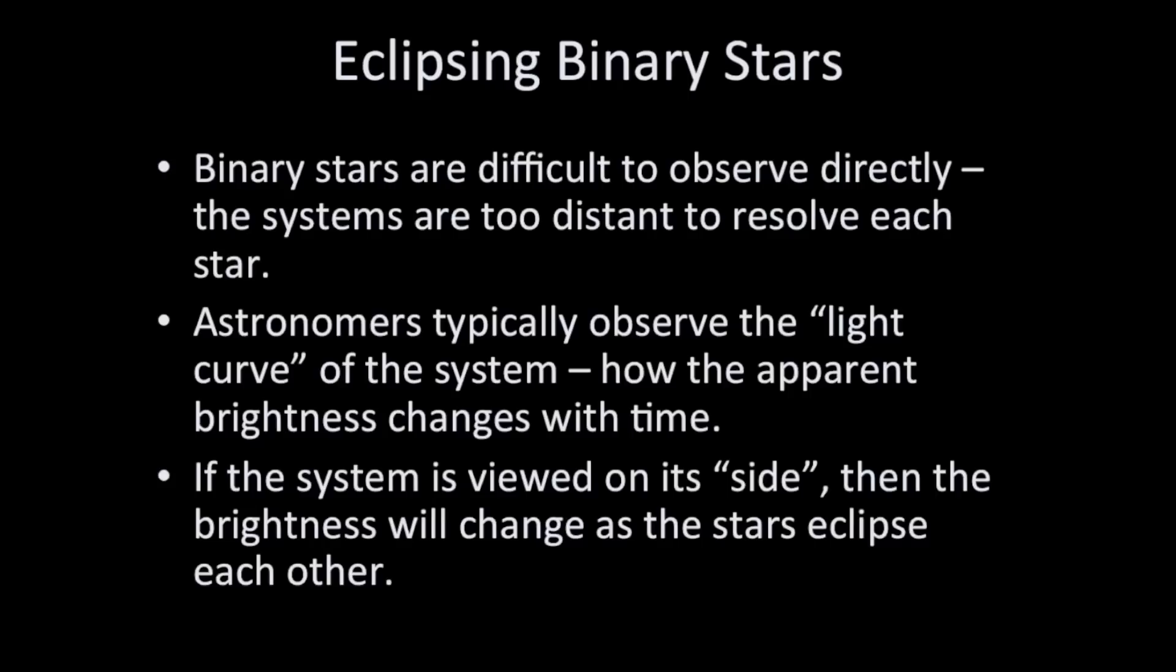If the stars are orbiting each other and they are inclined so that the plane of their orbit is viewed from the side from our vantage point, then we can observe them as an eclipsing binary system. This makes observing binary stars easier than if we were observing their orbit top-down.